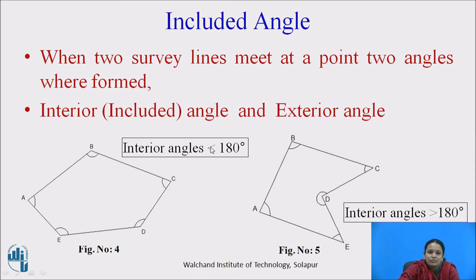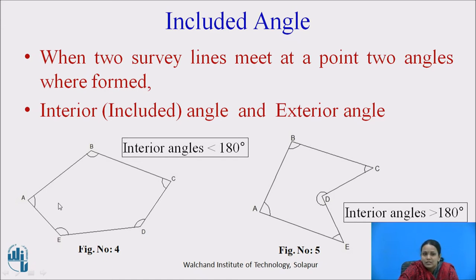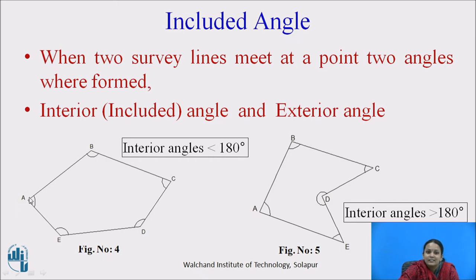Included angles: when we take survey lines and join two survey lines, they create an angle between them. In this figure showing a closed traverse ABCDE, when we join survey lines AB and AE, they create angle A. These angles are called included angles. There are two types of included angles: interior angles and exterior angles. Angles inside the figure are called interior angles and those outside are called exterior angles.